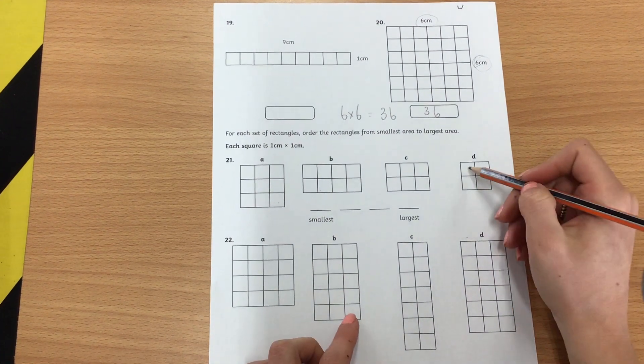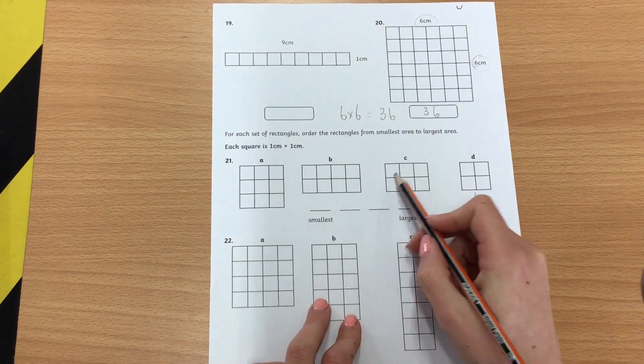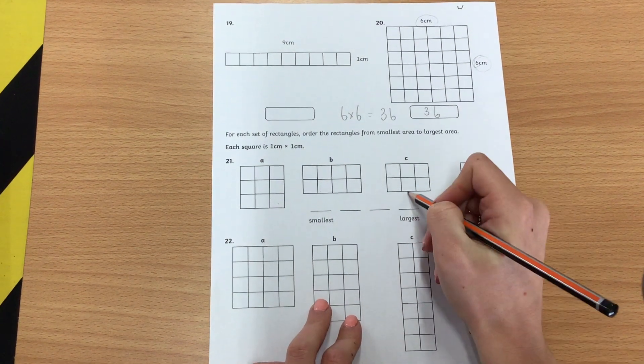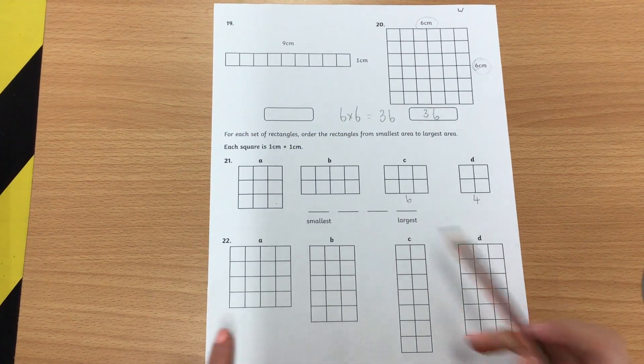So for example this one is 1, 2, 3, 4 squares so write 4 underneath it. This one, 1, 2, 3, 4, 5, 6, write how many are underneath it to help you see the size and then you can order them.